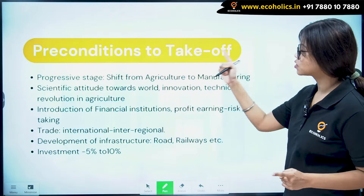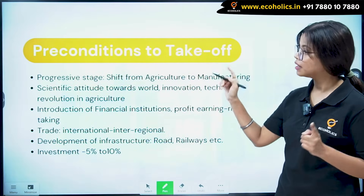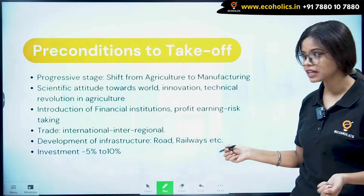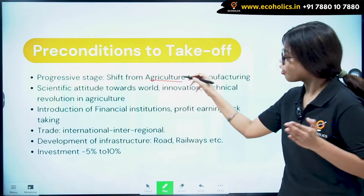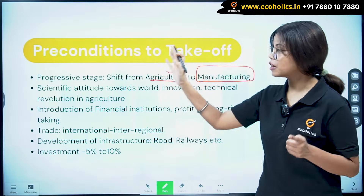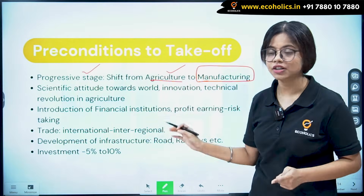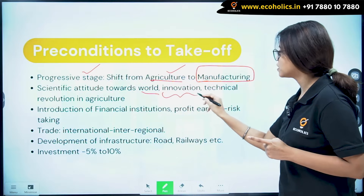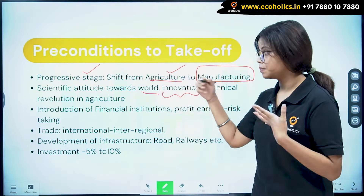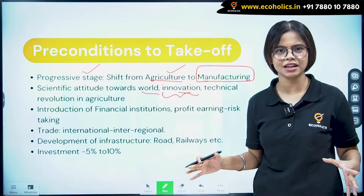The second stage is Pre-conditions to Take Off. This is a progressive stage because now we are moving — shifting — from the agriculture sector to the manufacturing sector. People now have a scientific attitude towards the world; they are into innovation, and a technological revolution is also coming up in the agriculture sector.